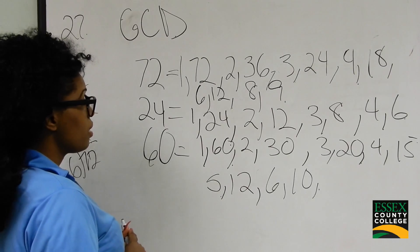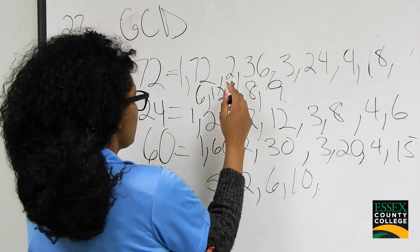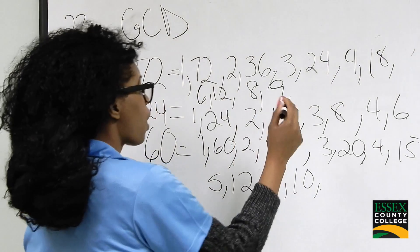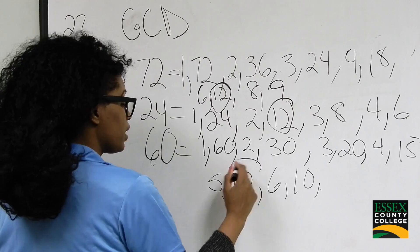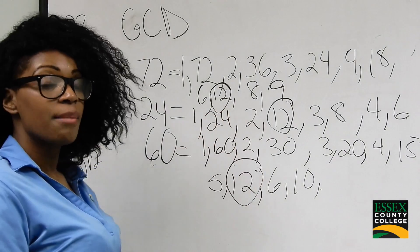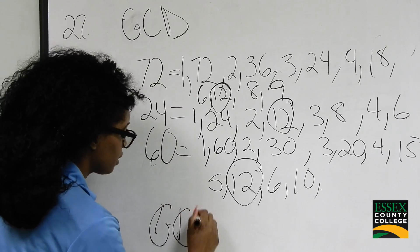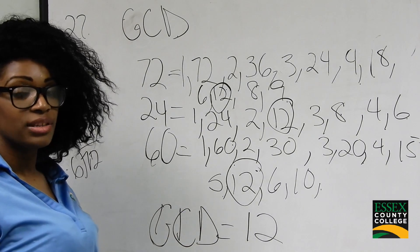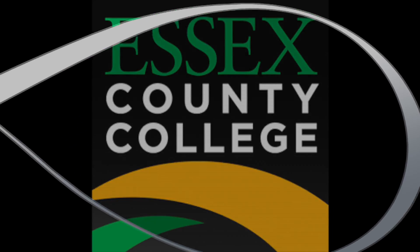I see 1 in 72, 24, and 60. I see 2 in all of them as well. The greatest common factor with all of these numbers is 12 — 12 is here, 12 is here, and there is a 12 here. So that is the greatest common factor, or greatest common divisor, of 72, 24, and 60. The answer is GCD equals 12.